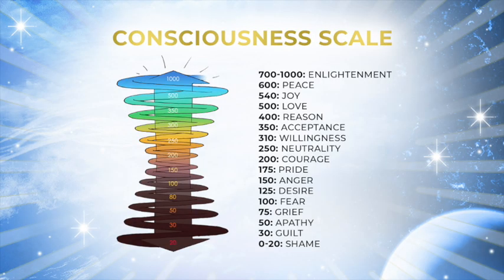On the scale of consciousness: zero to 20 represents shame; 30 is guilt; 50 is apathy; 75 is grief; 100 is fear; 125 is desire or unfulfilled desire; 150 is anger; 175 is pride. The frequency of 200 is courage — it's the first frequency where a human being recognizes that we're not disconnected, that we're connected to everything that exists. It takes courage to step over that bridge that connects us all.